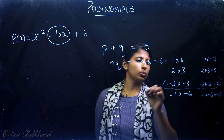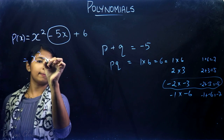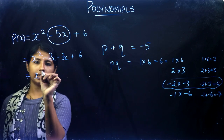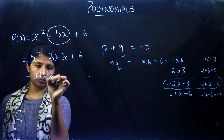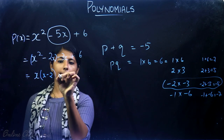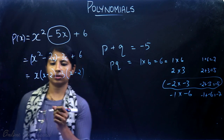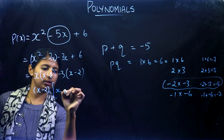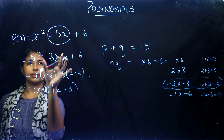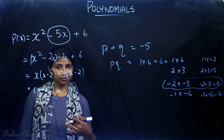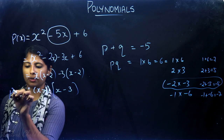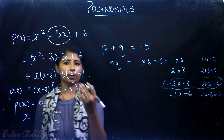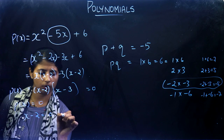The numbers that satisfy product = 6 and sum = -5 are -2 and -3. So we write x² - 2x - 3x + 6. Taking x common from the first two terms gives x(x - 2), and taking -3 common from the last two terms gives -3(x - 2). So p(x) = (x - 2)(x - 3).